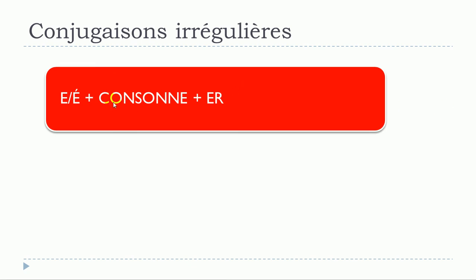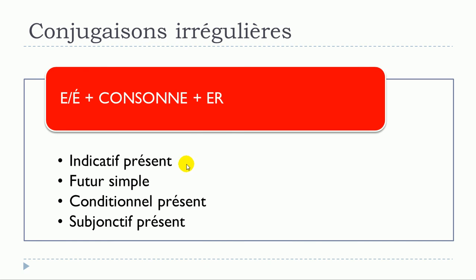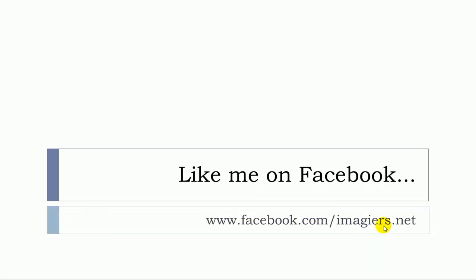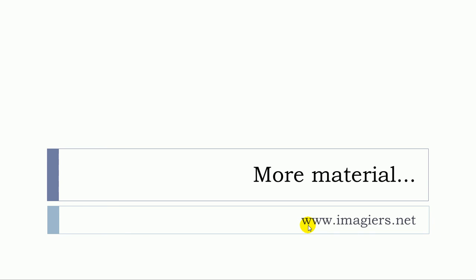So remember, for this subgroup of verbs — ending with E or E accent aigu, then une consonne, then ER — the following tenses have slight changes: indicatif présent, futur simple, conditionnel présent, and subjonctif présent. For all other tenses, no modifications. If you want more videos, youtube.com/imagi is waiting for you; you can also find more material at www.imagier.net. Have a great day, bye bye!